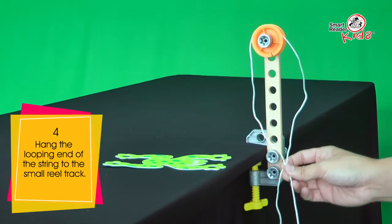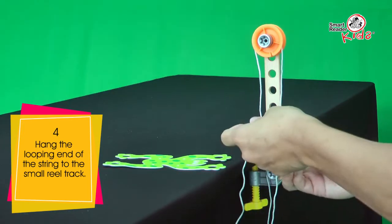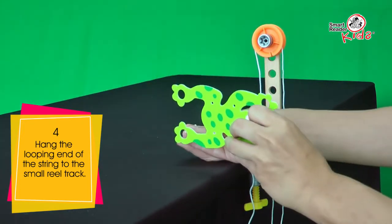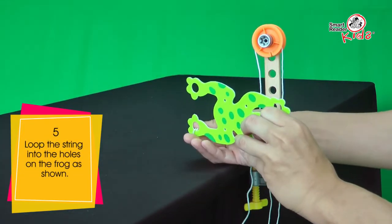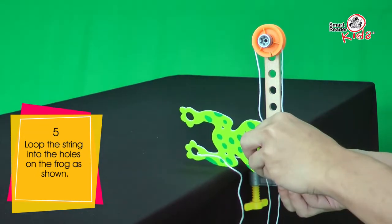Hang the looping end of the string to the small reel track. Loop the string into the holes on the frog as shown.